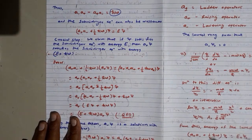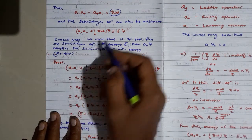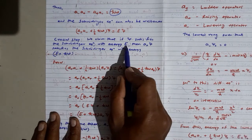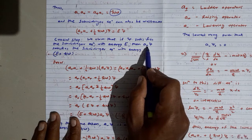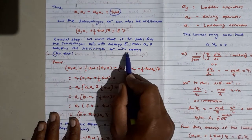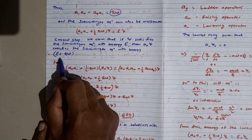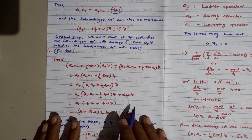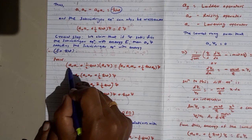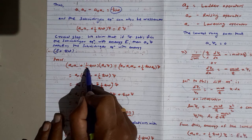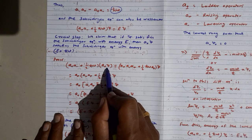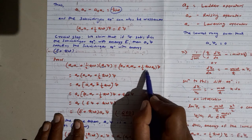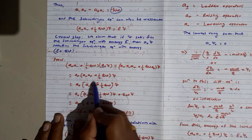The crucial step: we claim that if ψ satisfies the Schrödinger equation with energy E, then a₊ψ satisfies the Schrödinger equation with energy E + ℏω. We will try to prove whether this claim is correct. We operate the Schrödinger equation in the a₊a₋ format on (a₊ψ).